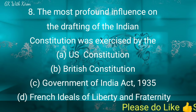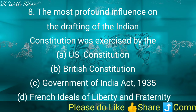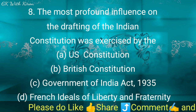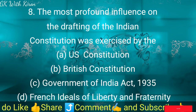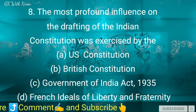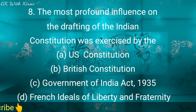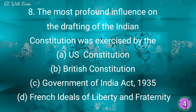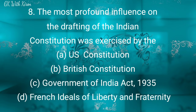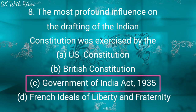Question eight: The most profound influence on the drafting of the Indian Constitution was exercised by — option A: the U.S. Constitution, option B: the British Constitution, option C: the Government of India Act 1935, and option D: French ideas of Liberty and Fraternity. The correct answer is option C: the Government of India Act 1935.